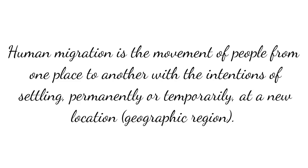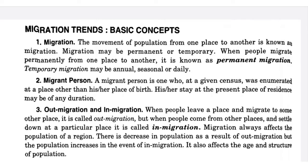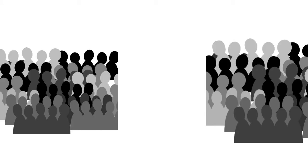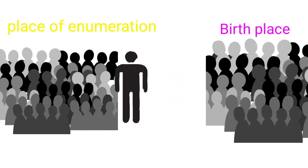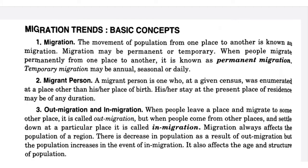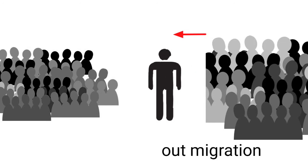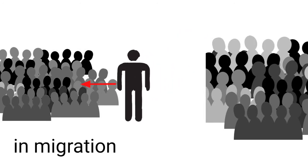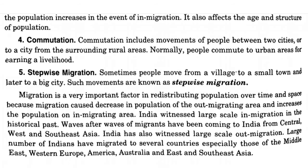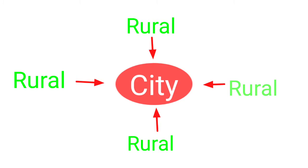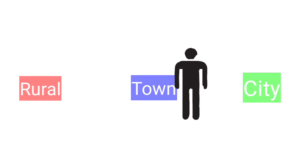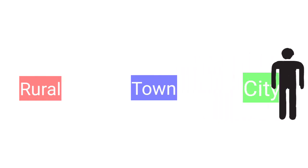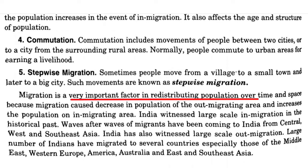We need to clear some concepts of migration. A migrant is a person who is leaving their birth place and arriving into some new geographic location or the place of immigration where their population will be counted. Out-migration means leaving the birth place; in-migration means arriving into some new area. Commutation refers to people who move from rural areas to city areas on a daily basis to earn their livelihood. Migration also happens from rural areas to town and from town to city — this kind of movement is known as statewide migration.